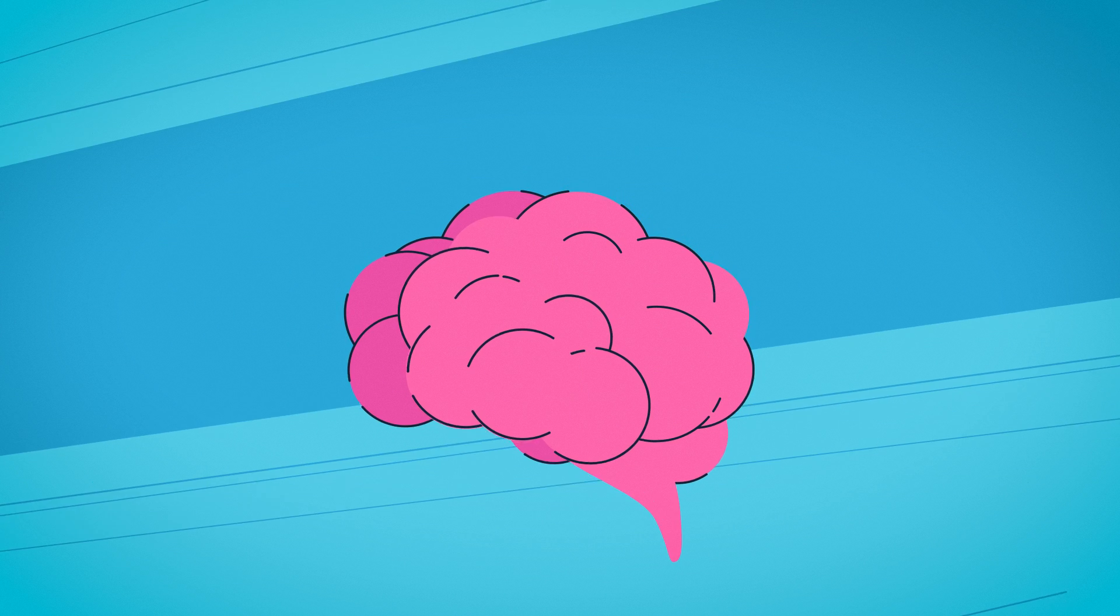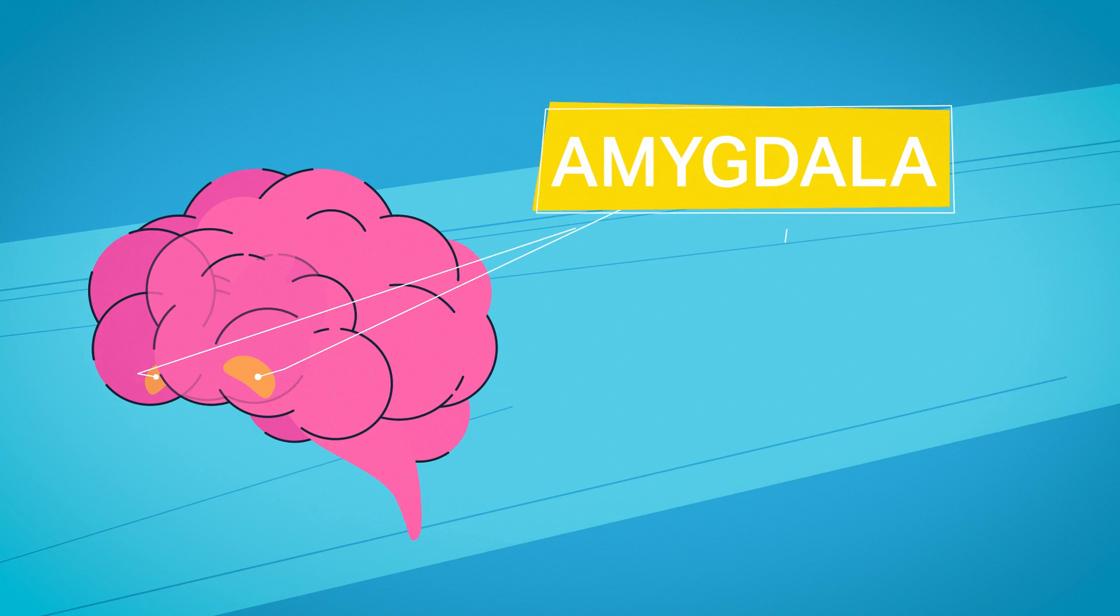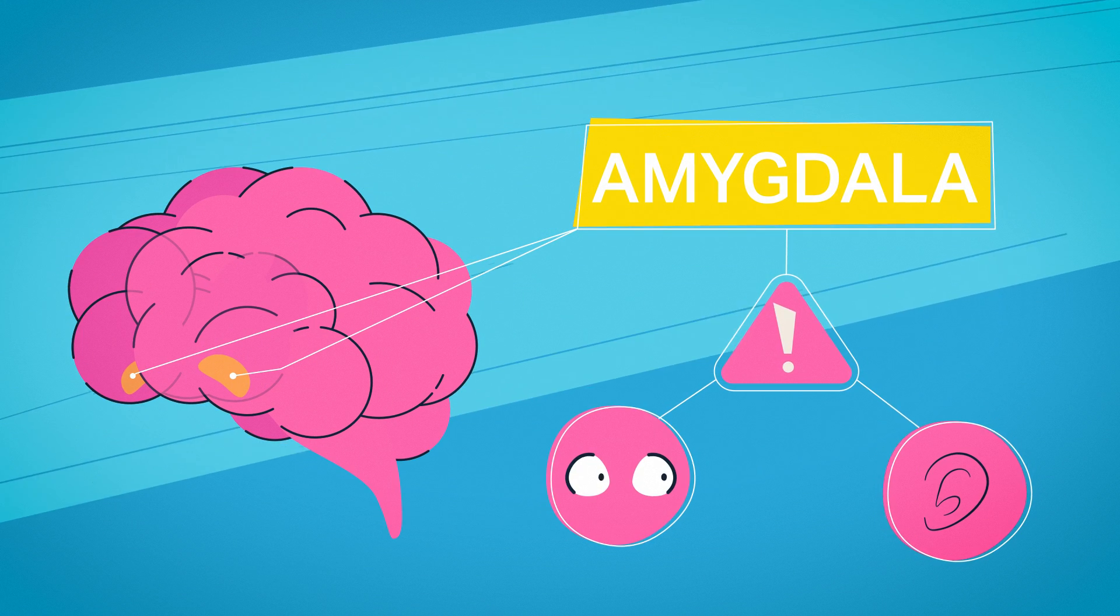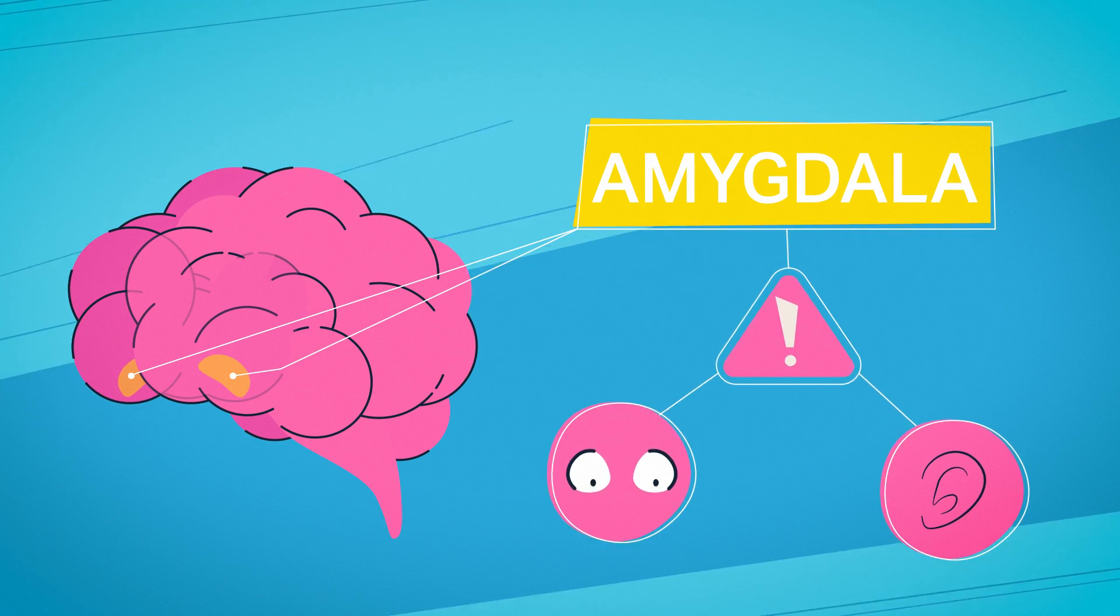Neuroscientists think our fear responses are partially guided by the amygdala, where visual and auditory information are processed and associated with past threats.